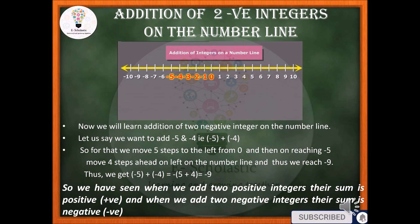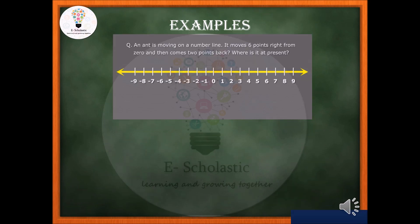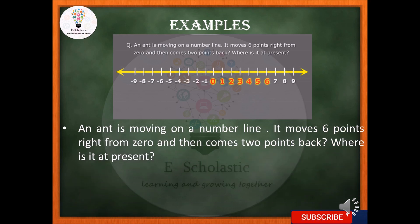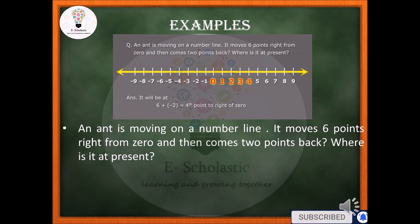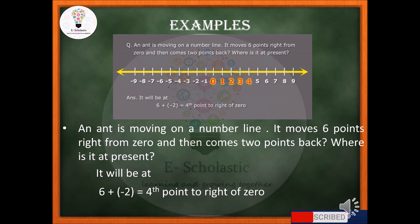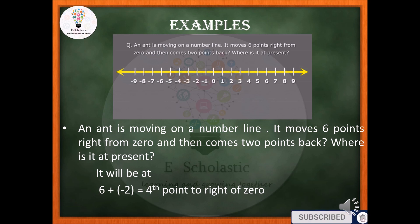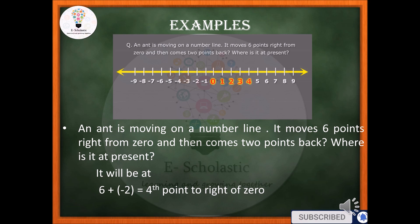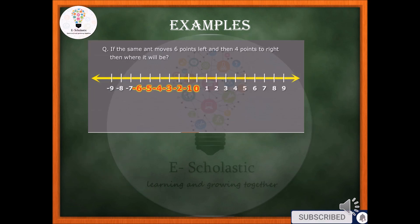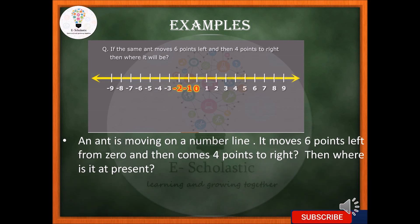Let's take one more example. An ant moves 6 points to the right from zero, then comes 2 points back. It will be at plus 6 minus 2, which gives you the 4th point to the right of zero. So the ant is currently at the 4th point.